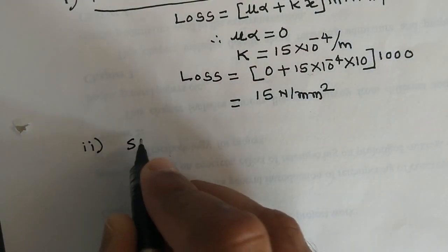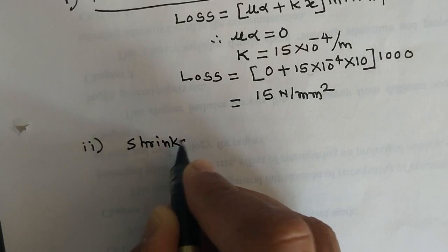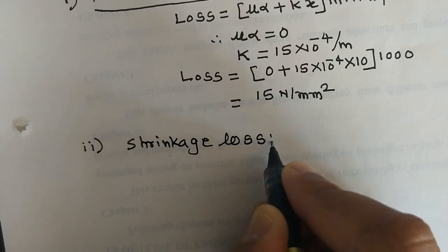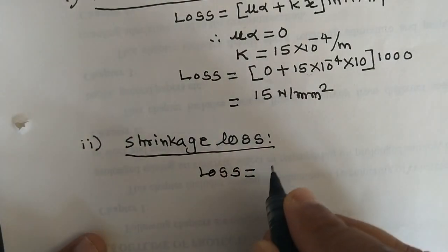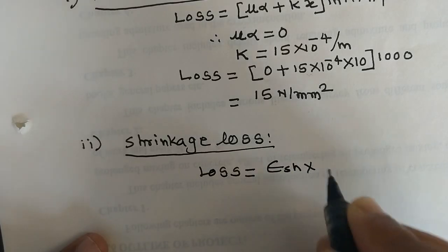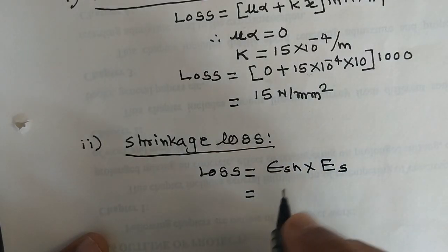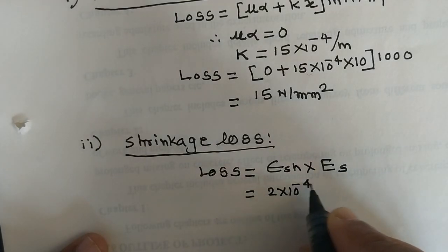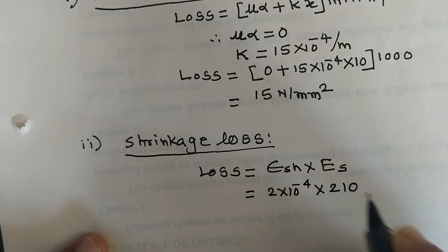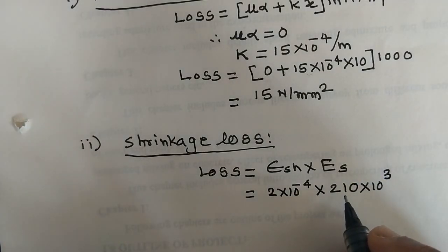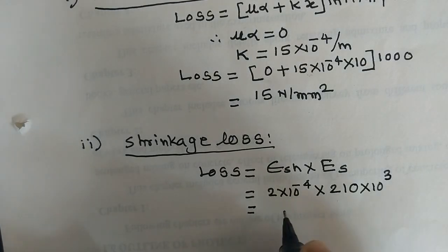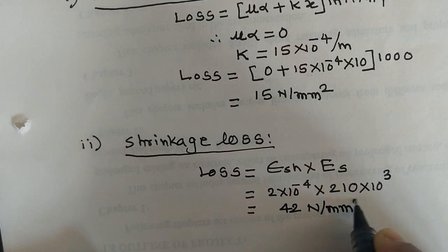Next is shrinkage loss, calculated using: loss equals shrinkage strain (epsilon_sh) × Young's modulus of steel. Shrinkage strain given is 2×10⁻⁴, multiplied by Es = 210 × 10³ N/mm². The result is 42 N/mm², which is the shrinkage loss.